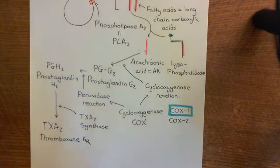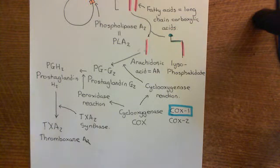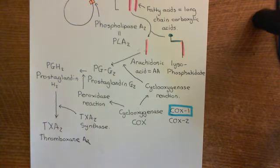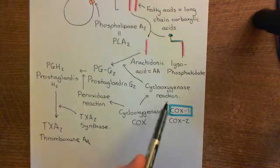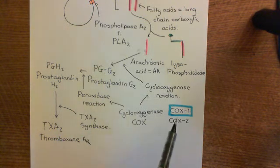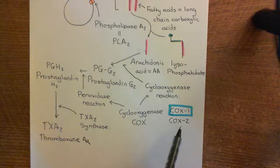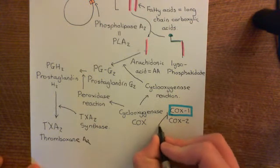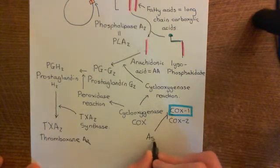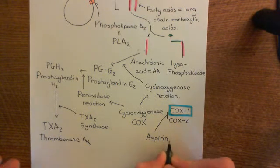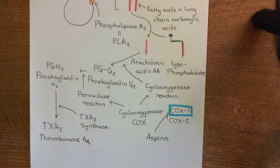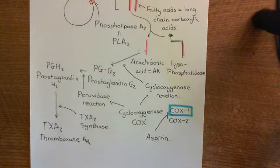How does aspirin stop the production of thromboxane A2? It inhibits cyclooxygenase enzymes — specifically, it is a non-selective inhibitor of cyclooxygenase, but the form of cyclooxygenase in platelets is COX-1. Aspirin is a permanent inhibitor: it makes a permanent modification to the active site of these enzymes that prevents them from catalyzing the reaction permanently.